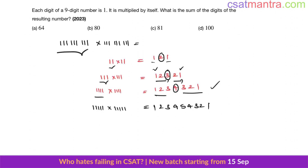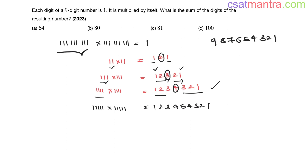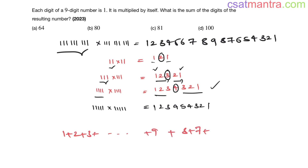When you have nine 1s, you will have 9 in the middle: 1, 2, 3, 4, 5, 6, 7, 8, 9, 8, 7, 6, 5, 4, 3, 2, 1. Now we need the sum of these digits: 1 plus 2 plus 3 plus up to 9, then plus 8 plus 7 plus 6 plus down to 1.